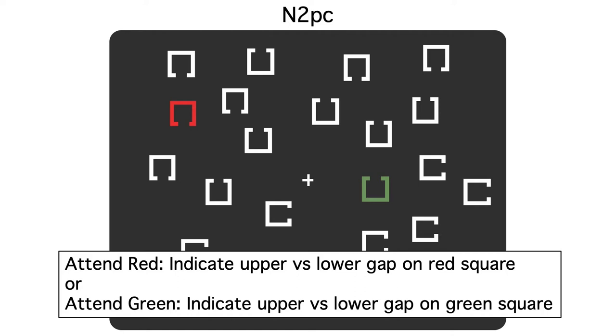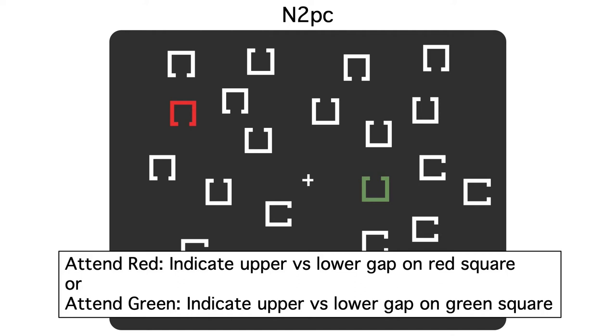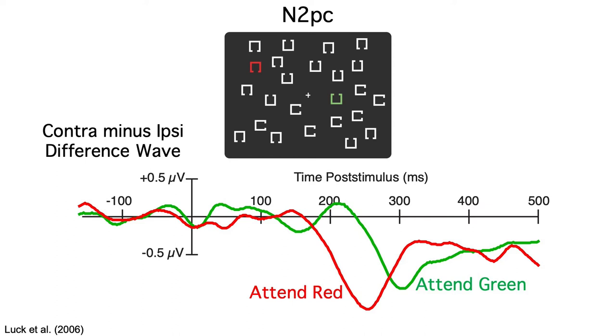Remember, subjects were instructed to attend to red in some trial blocks and green in others, and they pressed one of two buttons to indicate the location of the gap in the item of the attended color. Here are the contra minus ipsi difference waves. You can see that the N2PC is delayed about 50 milliseconds in the attend green condition. The difference wave onsets at around 180 milliseconds for attend red and around 230 milliseconds for attend green.